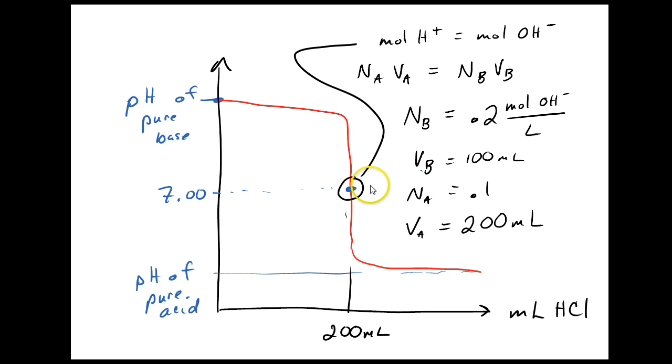The equivalence point is going to be a little tricky to find for the same reason. Moles of H plus equals moles of OH minus. That's NAVA equals NBVB, but NB, the normality of the base, is going to be twice as large as the concentration. From there, I can just solve for VA, 200 milliliters.